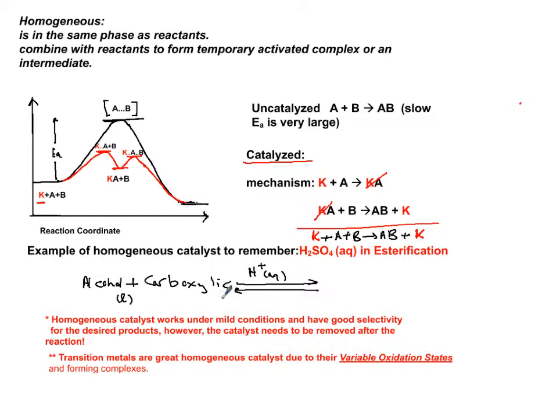Now, alcohol is the liquid phase, carboxylic is the liquid phase, and sulfuric acid aqueous is the liquid phase. Therefore, it's a homogeneous catalyst. On the other side, it will produce an ester plus water.